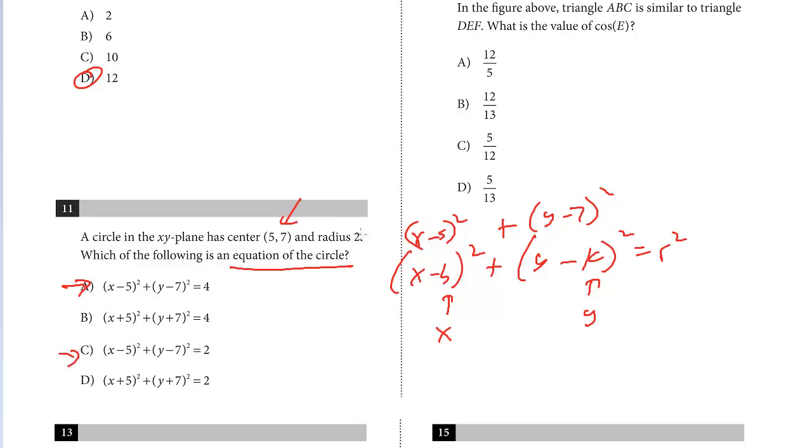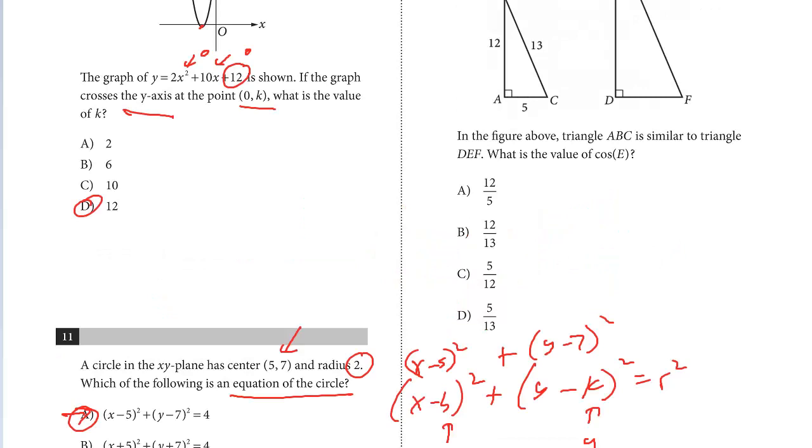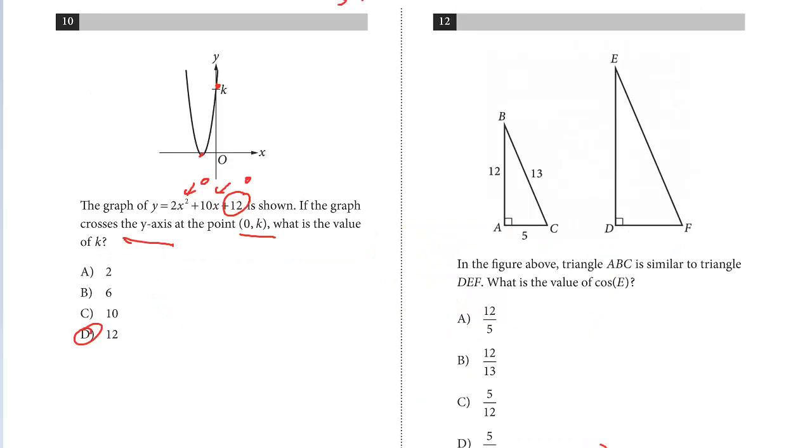Remember, the radius is 2, so r² is going to equal 4. And so the answer here is A. You really just have to know that formula for this problem. Not quite as advanced where you have to complete the square.